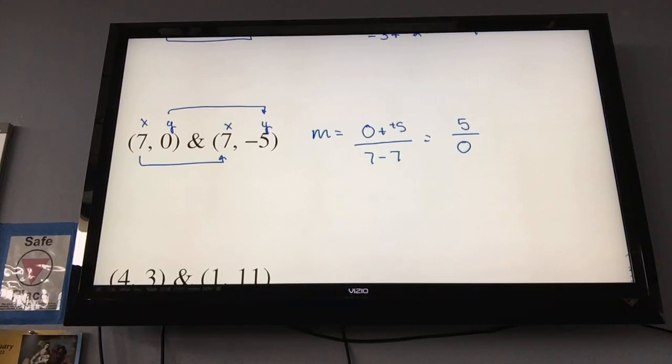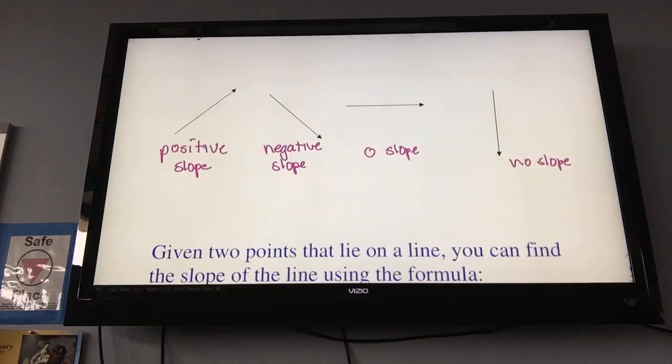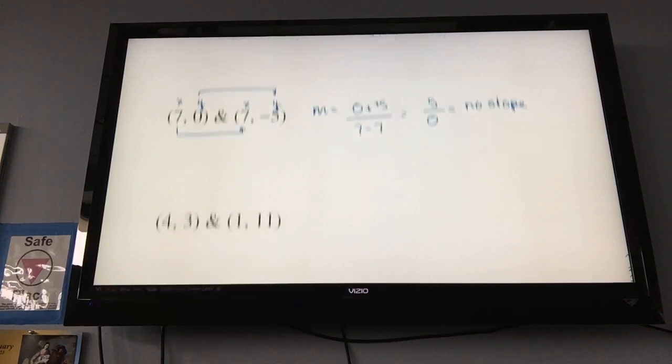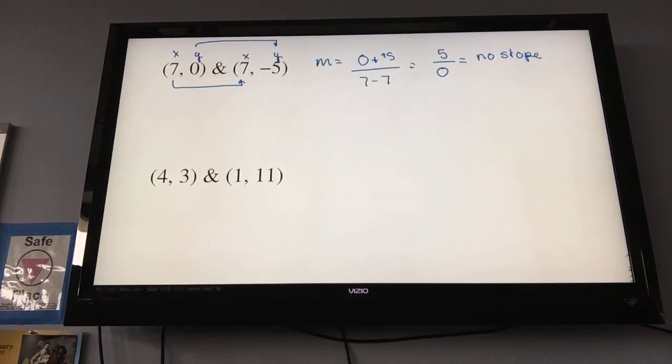Now, if you were to plug that into your calculator, you would get an error message. So, this particular calculation tells me that I have no slope. 0 cannot be in the denominator. This line would have no slope. And if I go back up to my pictures that I talked about earlier, it's a vertical line. If I drew those points and connected them, I would get a vertical line. So, 0 on the bottom, no slope.